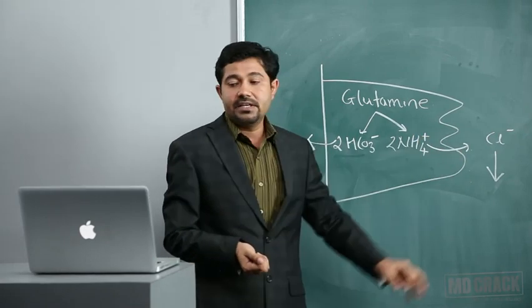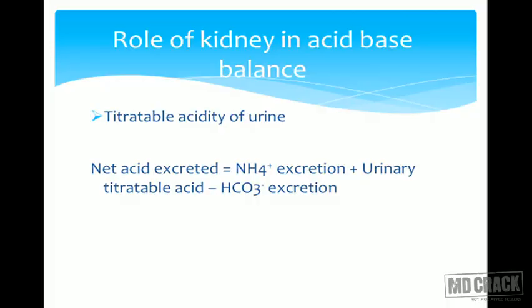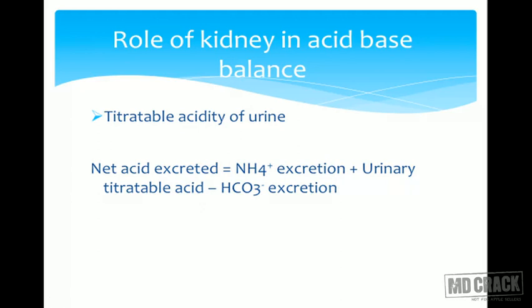The phosphate buffer system also acts as an important buffer in the renal tubule. To assess how much acid has been excreted in urine, we calculate the net acid excretion: Net acid excretion = ammonium excretion + urinary titratable acid - bicarbonate excreted. Titratable acidity is the amount of strong base that must be added to urine to bring its pH back to 7.4 (equal to ECF).